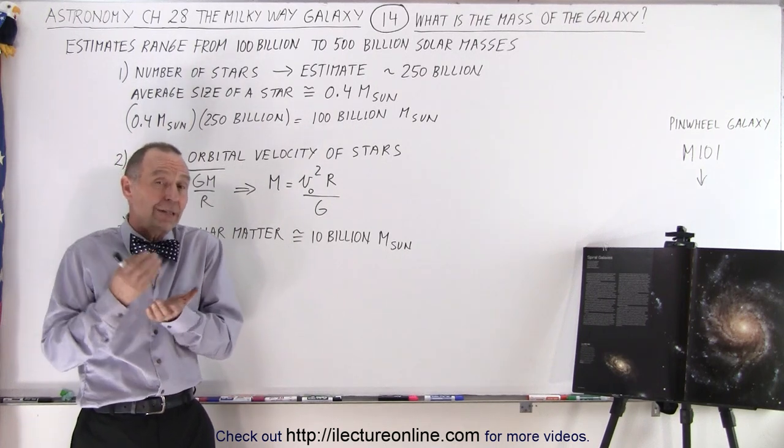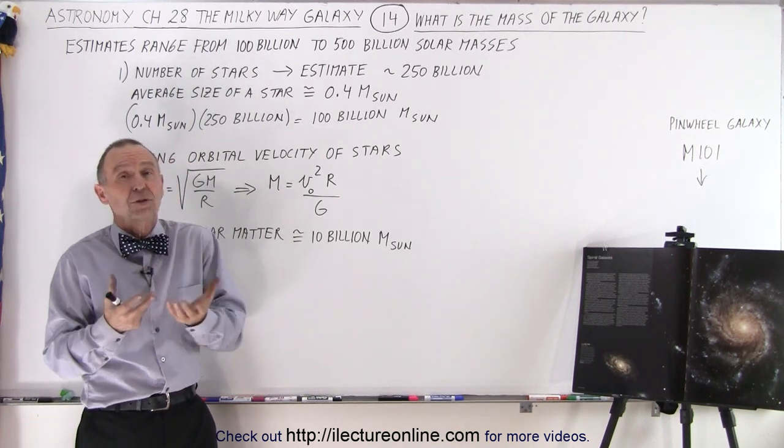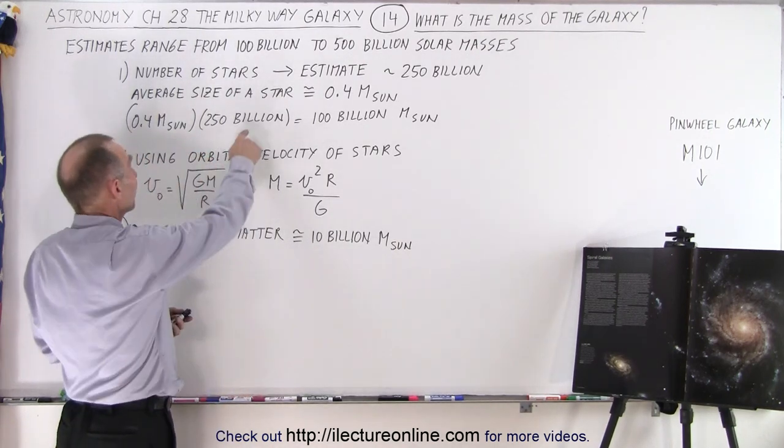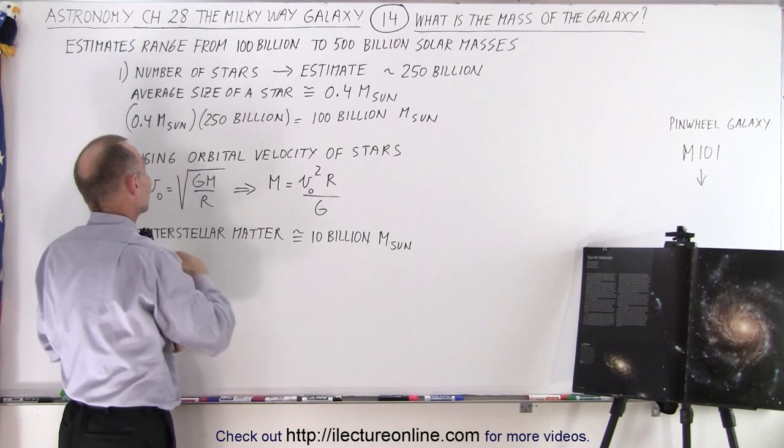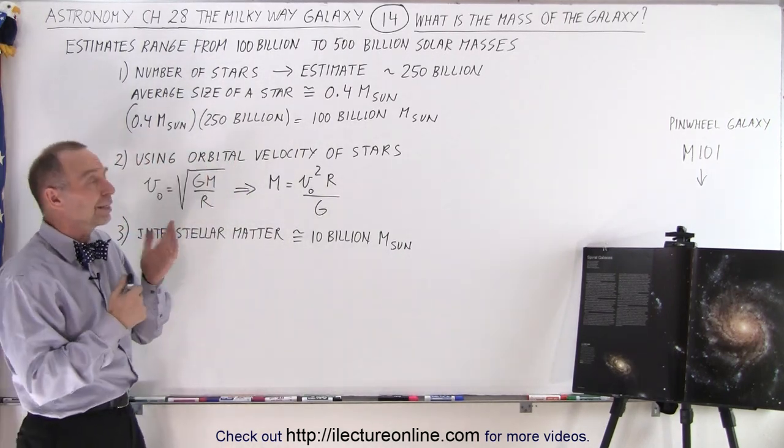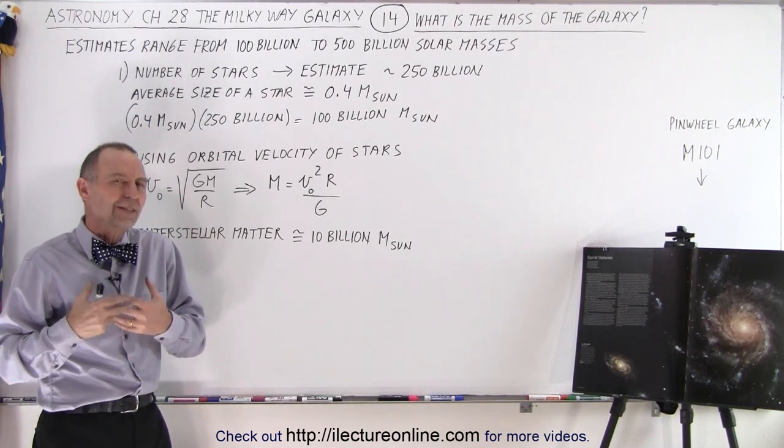And then from the ATAR diagram, we realized that the typical star is about 40% the mass of the sun. So all we have to do is multiply 250 billion times 0.4 times the mass of the sun, and out came 100 billion times the mass of the sun. It was kind of an accepted value.